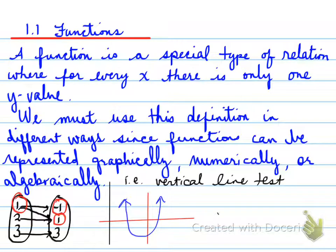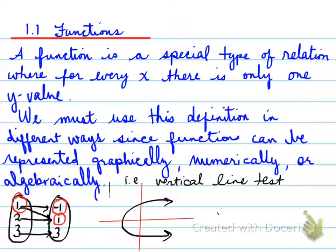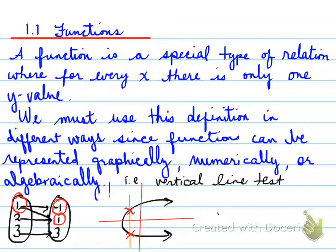What happens if we look at a different type of graph? If we take a vertical line here, we can see that the vertical line touches the black graph twice. And because it touches it twice, it fails the vertical line test, and therefore is not a function.